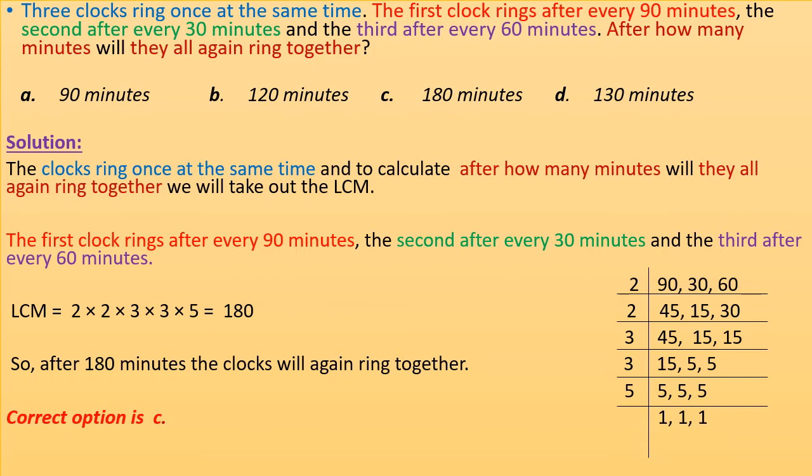Three clocks ring once at the same time. The first clock rings after every 90 minutes, the second after every 30 minutes, and the third after every 60 minutes. After how many minutes will they all again ring together?